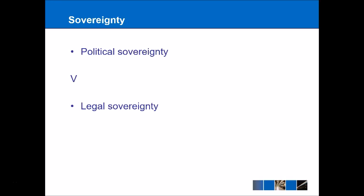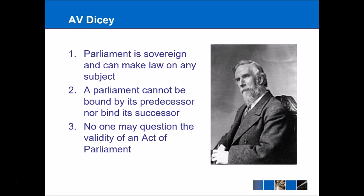The best place to start with a definition of parliamentary sovereignty is the classical theorist A.V. Dicey, who gives three key definitions. Firstly, Parliament can do whatever it likes in terms of the laws that it passes. Secondly, a Parliament cannot be bound by its predecessor nor bind its successor — so the 2016 Parliament cannot have been bound by the 2015 Parliament, nor can it bind the future 2017 Parliament. Thirdly, no one can question an Act of Parliament in terms of its validity.